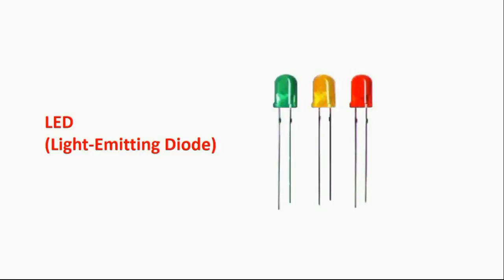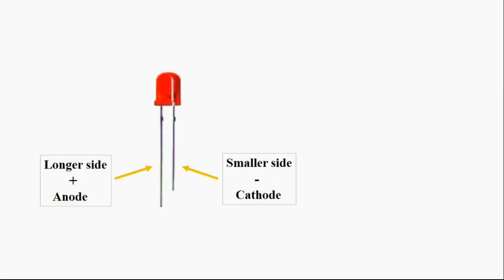An LED, or light emitting diode, is an electronic component used for lighting. It has two terminals: the longer side is positive (anode) and the shorter side is negative (cathode). When using an LED in a circuit, we must connect the terminals correctly.